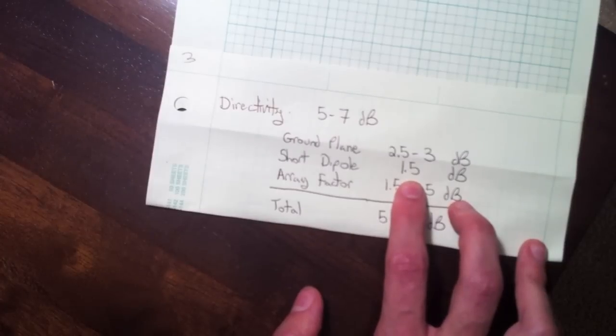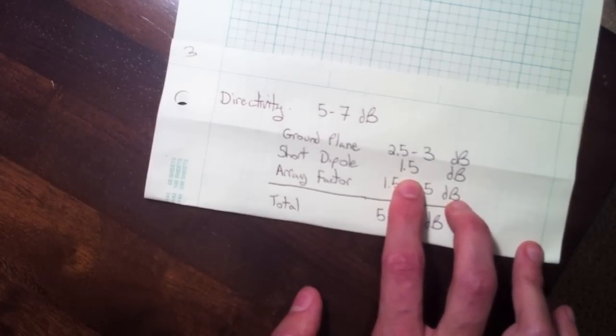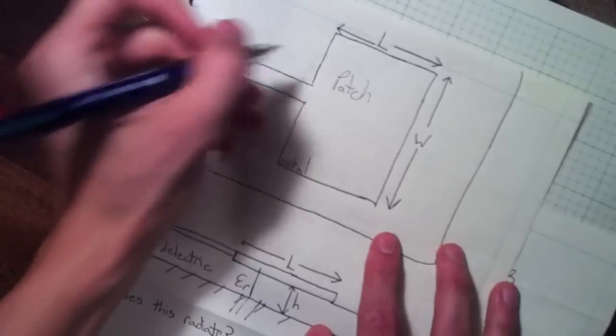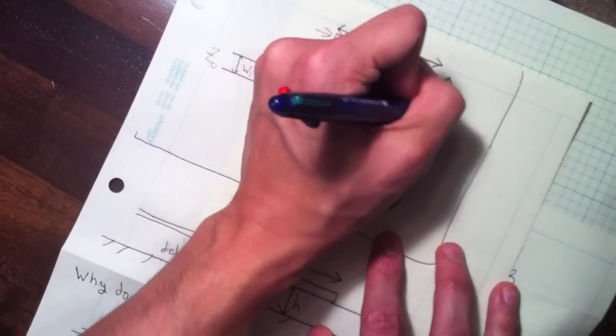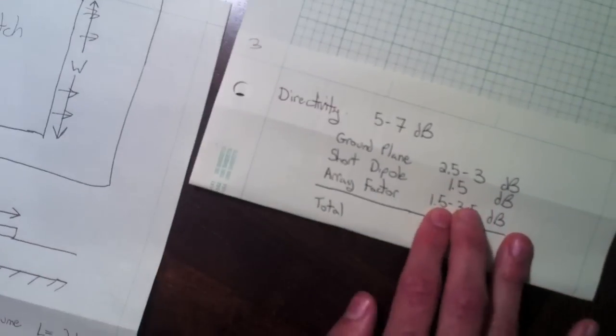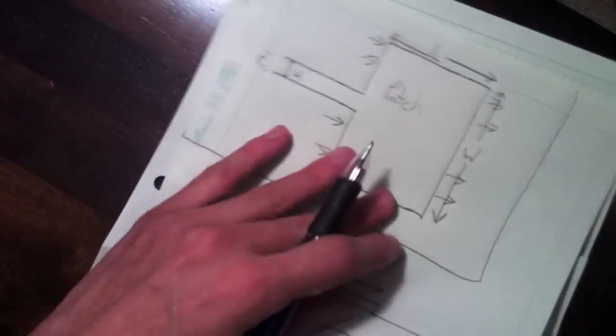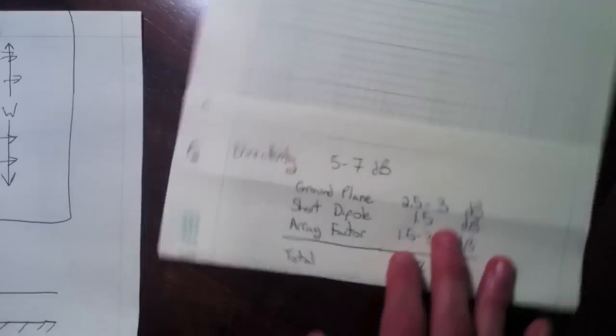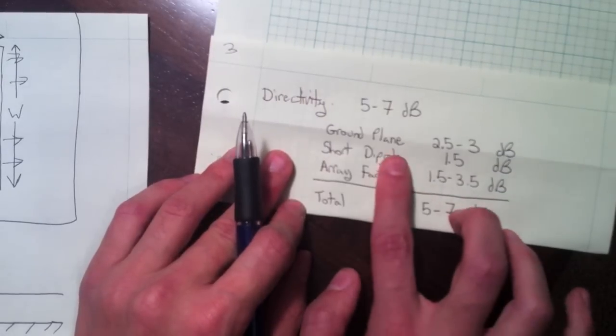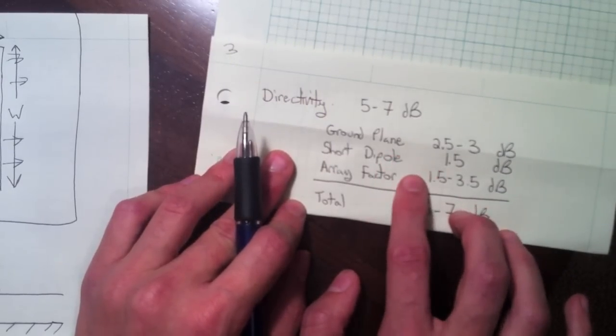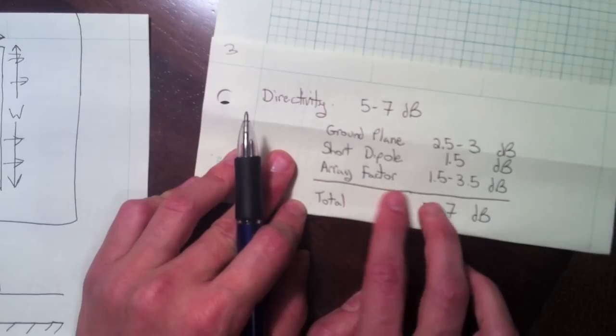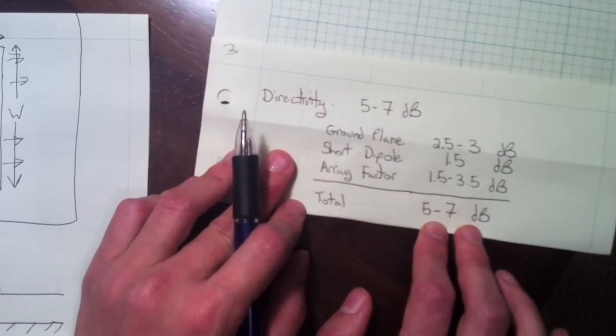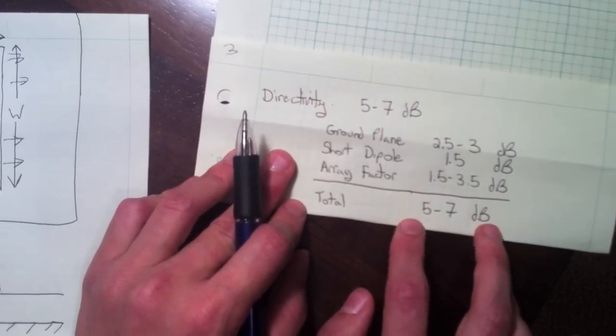We can think of the radiation as coming from a bunch of short dipoles. Recall the radiation is here, so we can think of each one of these as a short dipole. The short dipole has a radiation of 1.5 dB, but we also have a bunch of them which makes an array. So in total, adding the effect of the ground plane, a short dipole that's the fringing field's radiation, and the array factor, we end up with 5 to 7 dB. So here's an intuitive idea of where the directivity of the patch comes from.